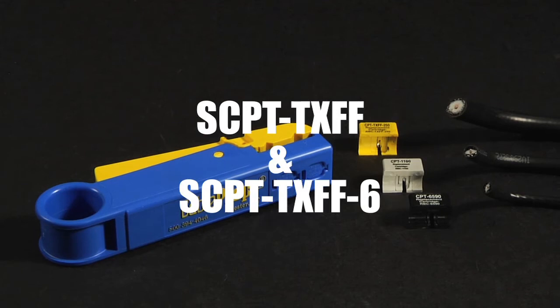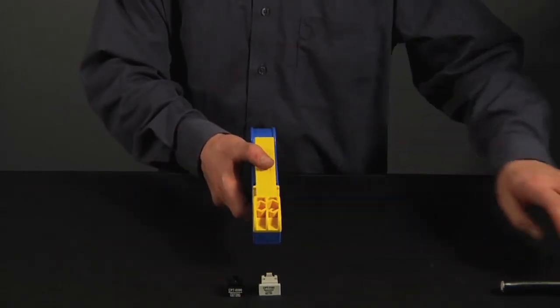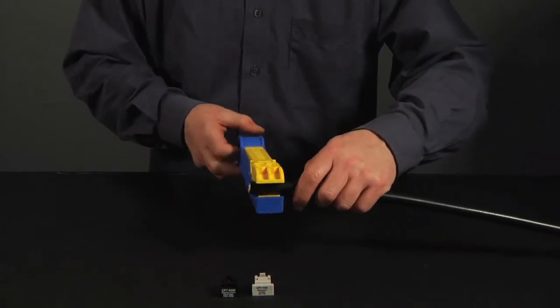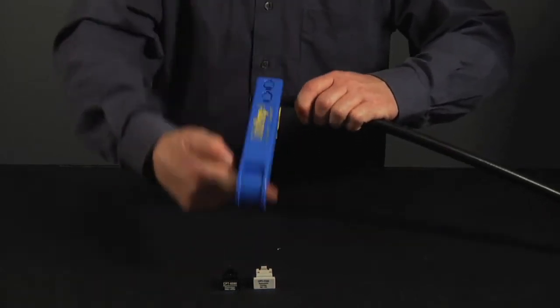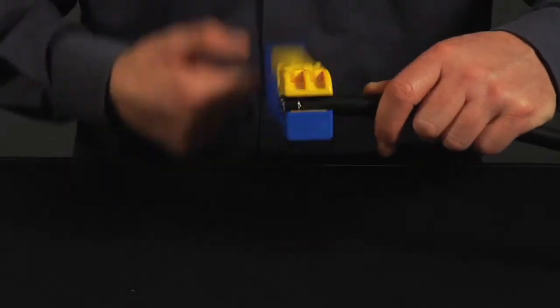SCPT. TXFF. The SuperCPT tool is specifically designed to remove the cable jacket, cut the braid and dielectric, and expose the center conductor on large and small diameter braided cables, all in one smooth operation.